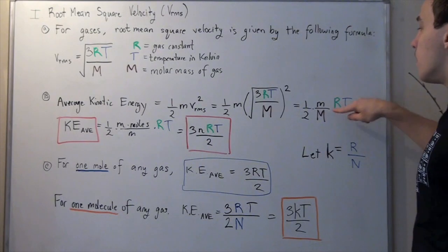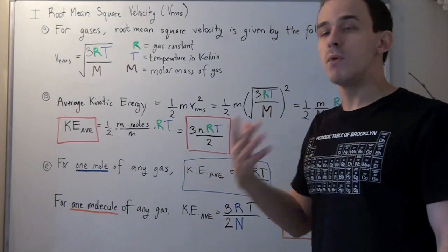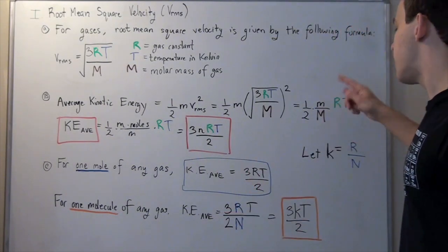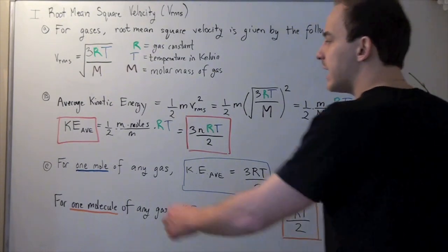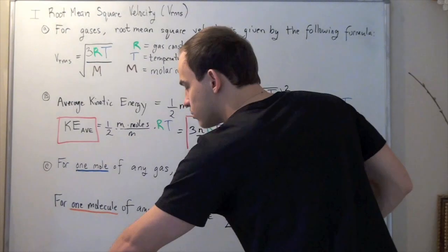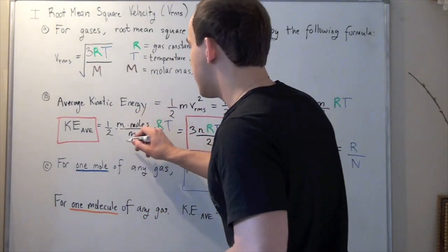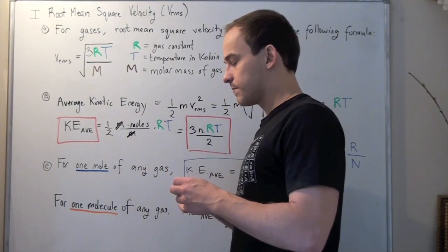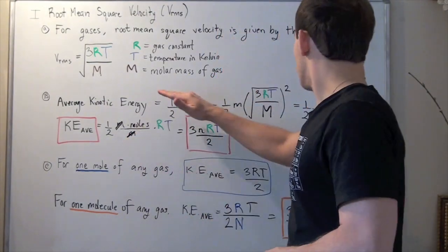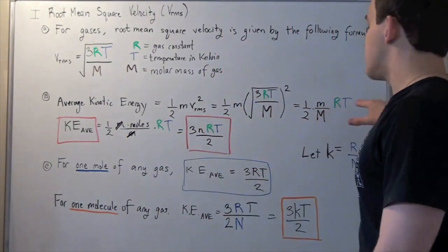Now remember, molar mass has units of mass divided by moles, so the mass will cancel and moles will go on top. We'll get 1/2, and all the M's will cancel. The moles will go on top and we'll have R times T.